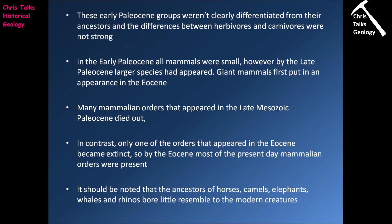In the early Paleocene most mammals would have been small, however by the late Paleocene we begin to see the evolution of larger body designs. We don't see the appearance of giant mammals until the Eocene, for two reasons: first, it obviously takes time for evolution to produce very large body designs; and second, in the early Cenozoic there was also competition from larger bird species, meaning it took a little longer for larger mammalian species to evolve and outcompete those larger birds. Many mammalian orders that appeared in the late Mesozoic to early Paleocene went extinct, outcompeted by more advanced mammalian groups.